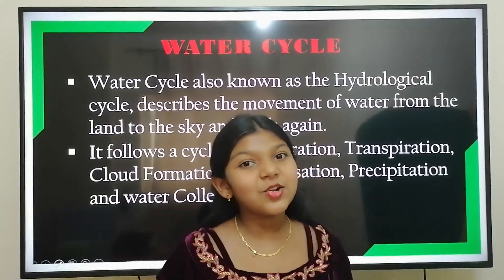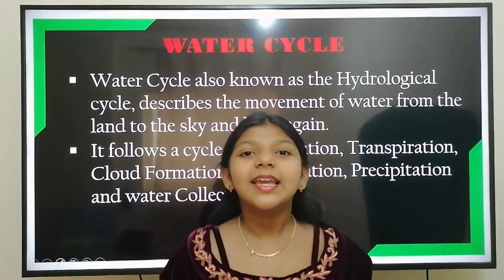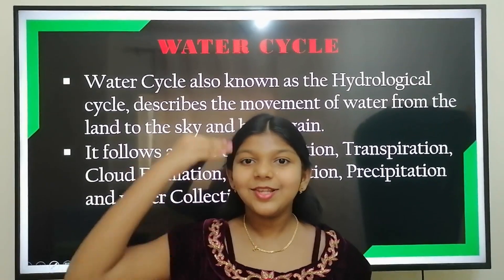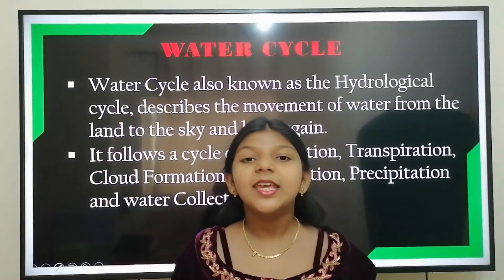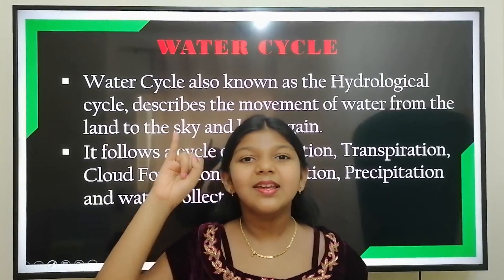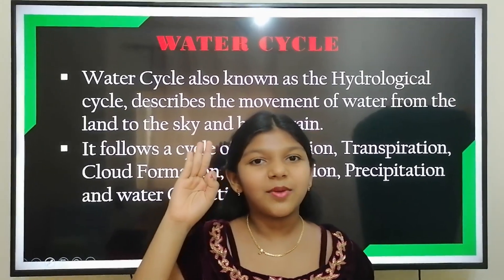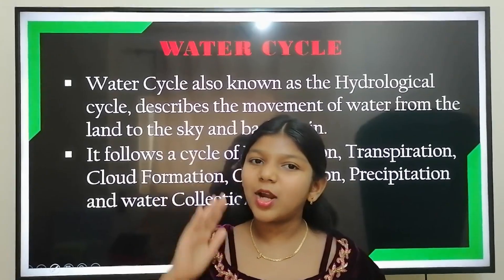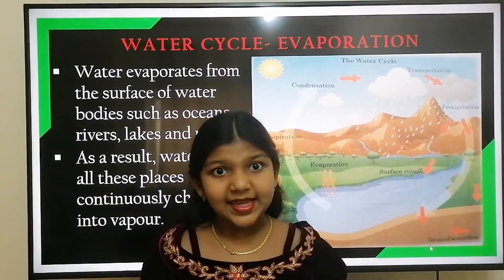The water cycle is also known as the hydrological cycle. It describes the movement of water from the land to the sky and back again. It follows a cycle of evaporation, transpiration, cloud formation, condensation, precipitation, and water collection.